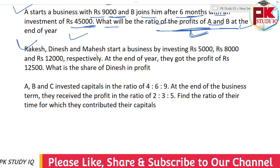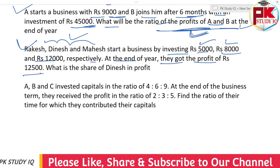Three partners started a business by investing Rs. 5,000, Rs. 8,000, and Rs. 12,000. A profit of Rs. 25,000 was earned. Find each partner's share of the profit. This is a very easy question.